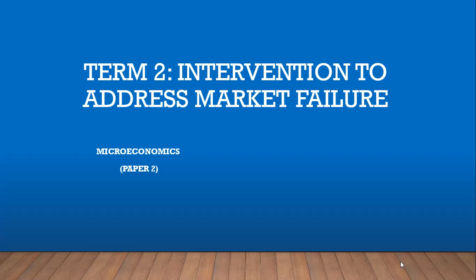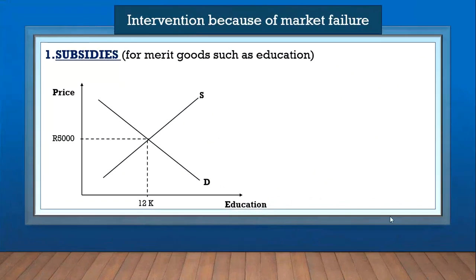In part one of the video we looked at market failure, so in this video we're going to look at what the government can do to address market failure. Here's a first example: subsidies. The government can introduce a subsidy for merit goods such as education.